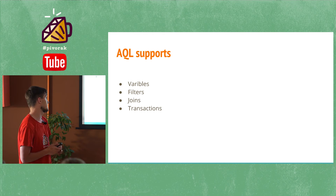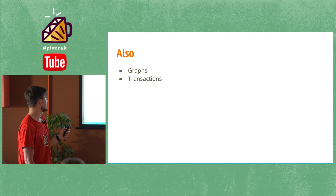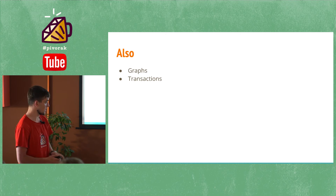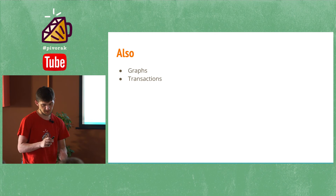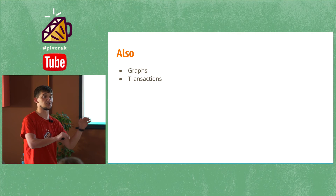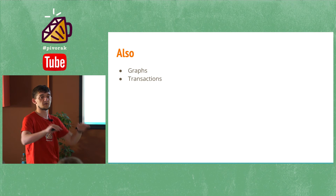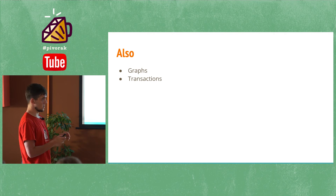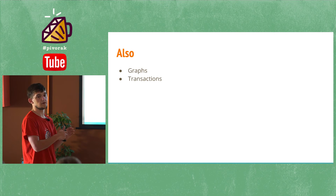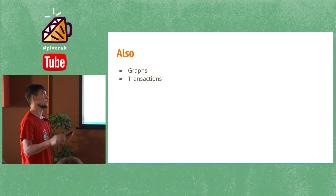They have a cool mechanism for transactions as well. Also, they have graphs. There are two types of collections: one is a collection of documents, and the other is a collection of edges. Using edges and collections, you can build a graph, and they have built-in mechanisms and algorithms for working with graphs.